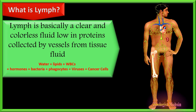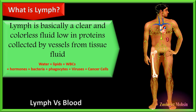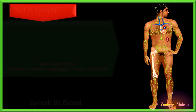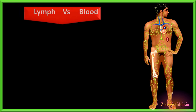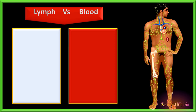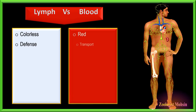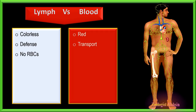After passing through lymph nodes, this lymph may also contain hormones, bacteria, macrophages, viruses, debris, and cancer cells. What is the difference between lymph and blood? Lymph is a colorless fluid while blood is red due to hemoglobin. Lymph provides defense while blood transports materials from one organ to another throughout the body.